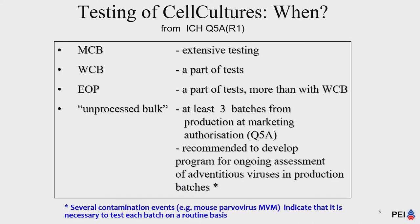The second measure towards viral safety is the testing of cell culture. The current ICH outlines a very helpful scheme for where to test cell culture. The most central point is the master cell bank, where extensive testing is required. A subset of tests is then also required for the working cell bank and for the end-of-production cells — sometimes referred to as LIFCA, meaning cells at the limit of in vitro cell culture age — which is more or less the same as end-of-production cells, or EOP.